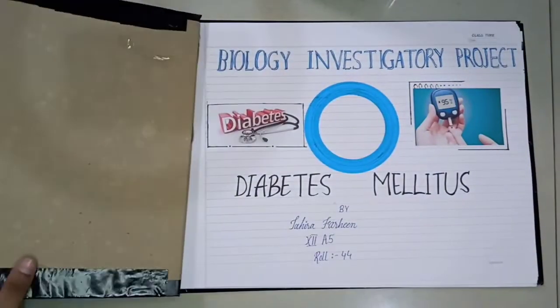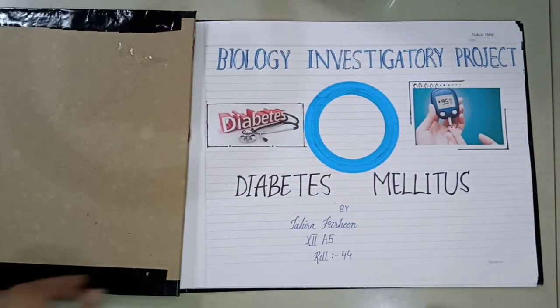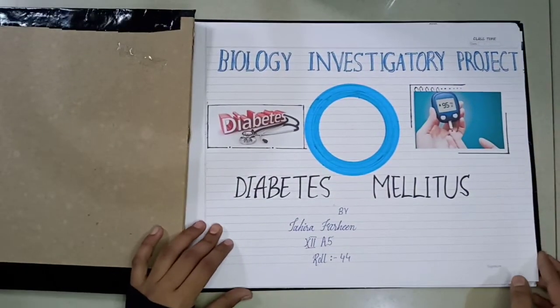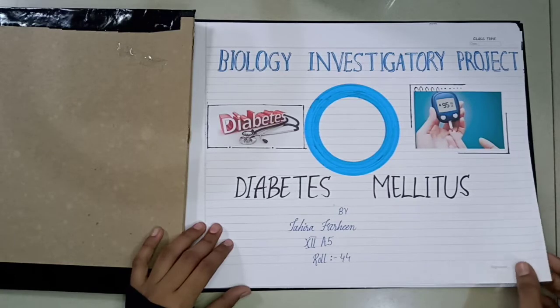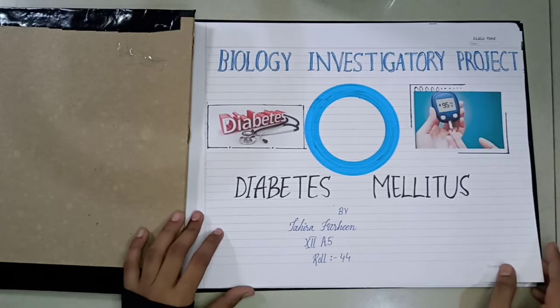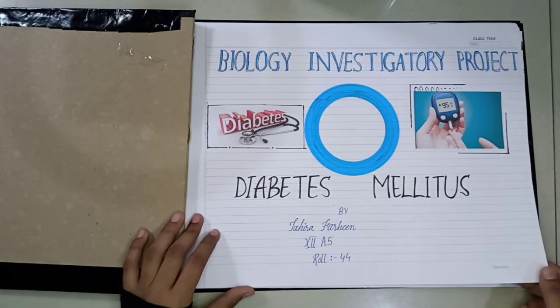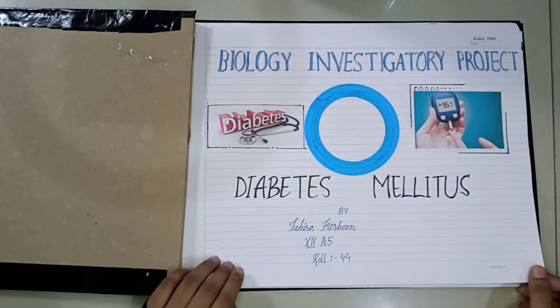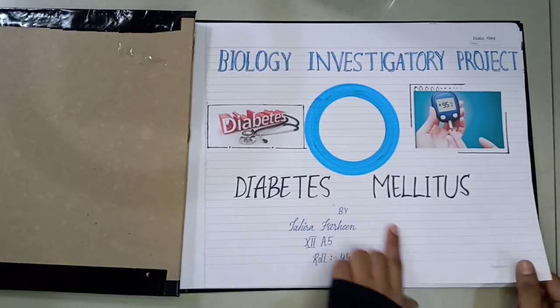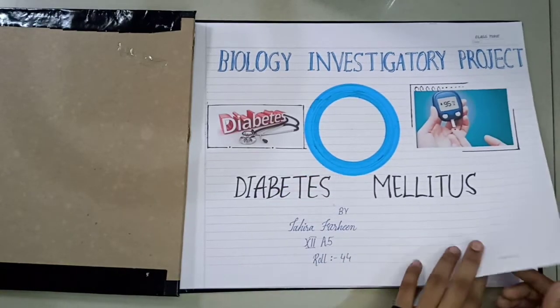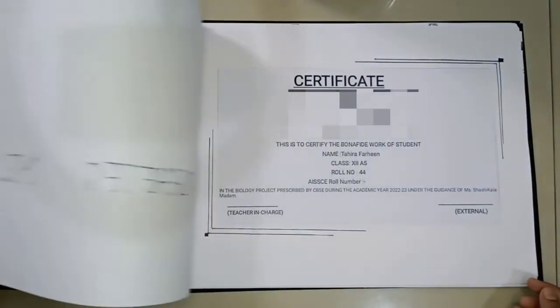Next, we have the first page of our project. Here I have made a blue ring, which is the universal sign of diabetes. Other information is also there on this page.